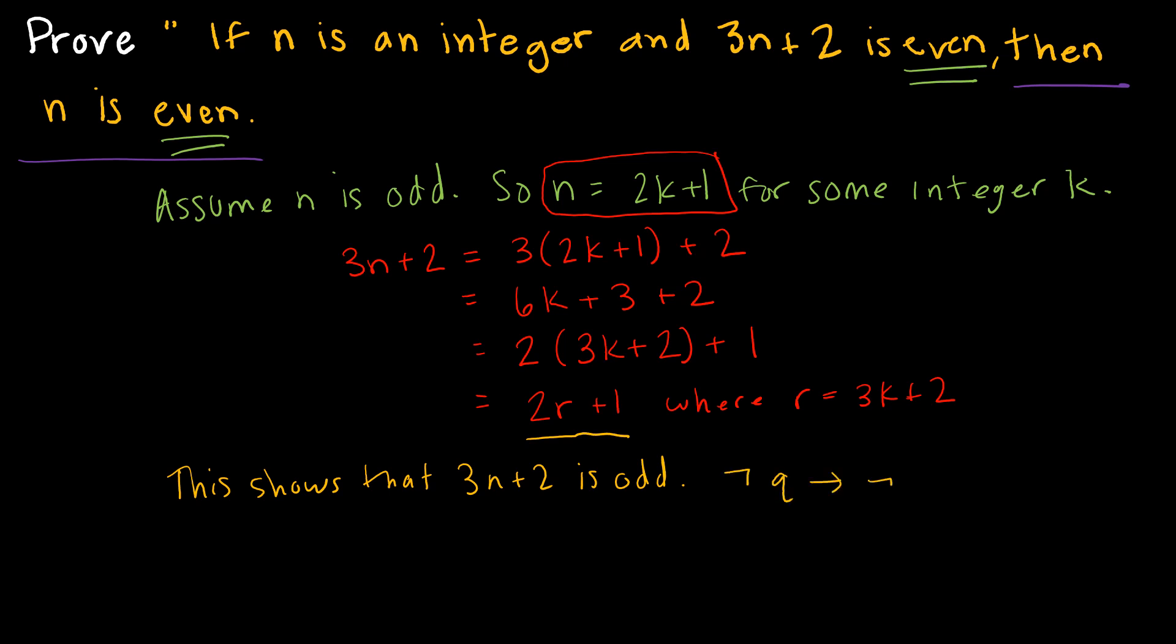And again, we have just proven by contraposition that not Q, if not Q then not P, and therefore we have shown if N is an integer and 3N plus 2 is even, then N is even.